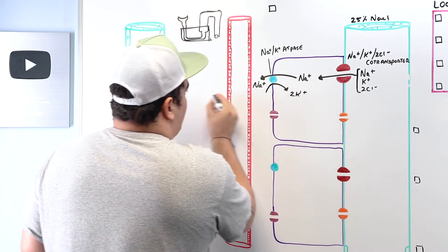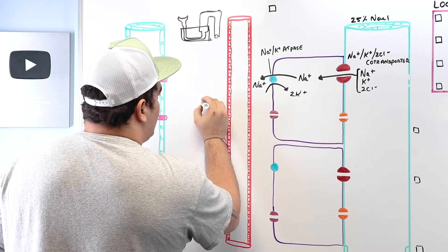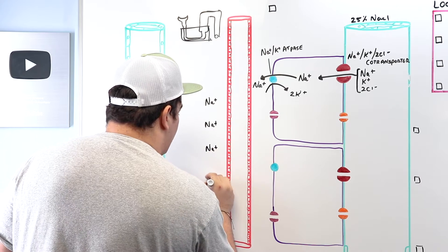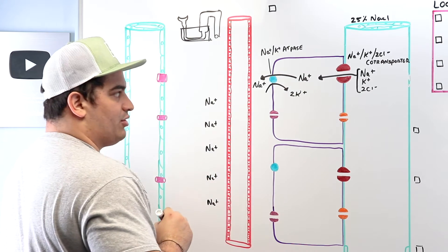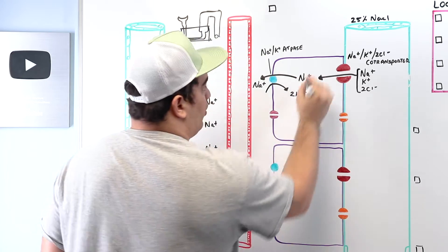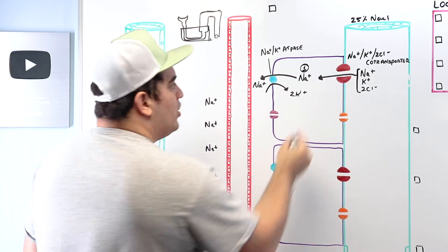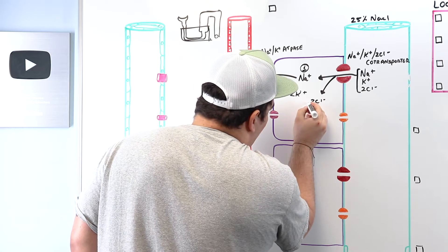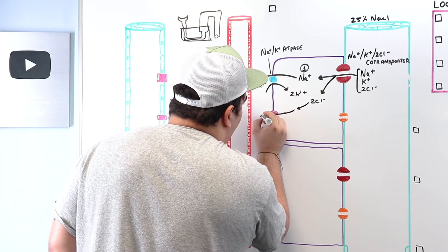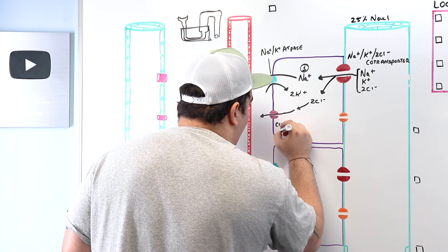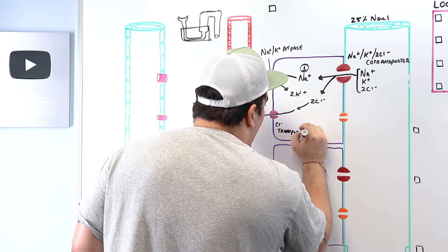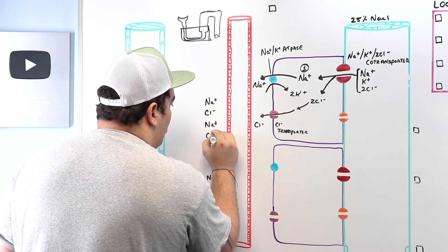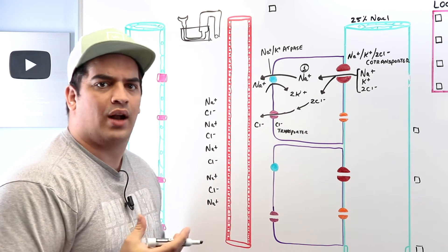The sodium starts accumulating in this interstitial space. The sodium-potassium-2-chloride co-transporters push a decent amount of sodium out into this interstitial space. The two chloride ions that were brought into the cell then move out via their chloride transporter into the interstitial space. So not only do we have sodium out in the interstitial space, but we also have chloride — sodium chloride, essentially salt. This makes the interstitium within the medulla very salty.